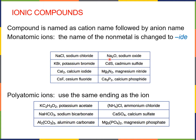Here we have another example: Na2O becomes sodium oxide. When naming ionic compounds, we don't take into account the subscripts. For example, here you have 2 next to sodium, here you have 3 next to magnesium, and 2 next to nitrogen. We simply use the names of the cation and anion without respect to how many of them there are. So Mg3N2 is magnesium nitride, and Ca3P2 is calcium phosphide.